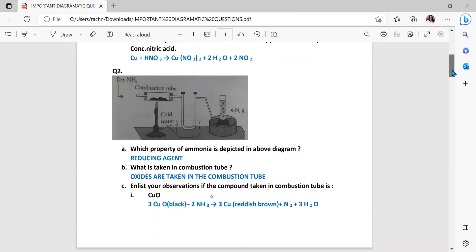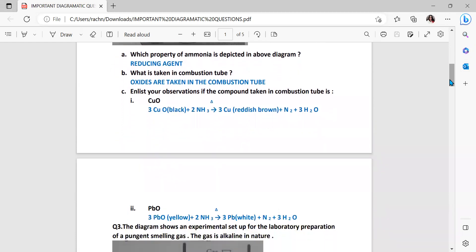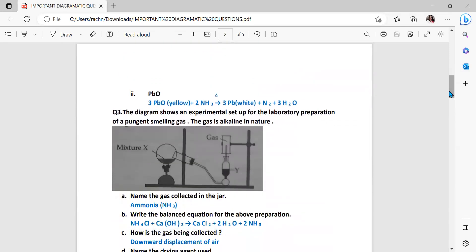Question number two. It is the diagram which shows the chemical property of ammonia. Which property of ammonia is depicted in the above diagram? Its reducing agent. What is taken in combustion tube? Copper oxide and lead oxide are taken. Enlist your observations with the compound taken in the combustion tube. Copper oxide is black in color initially. When it is heated with ammonia gas you can see copper, nitrogen, and water are formed where the colors are very important. This can be your observation based question also. Your copper oxide is black in color and your copper is reddish brown. Lead oxide is yellow in color which when heated with ammonia gas it forms a white precipitate which is of lead, nitrogen gas is evolved and water is formed.